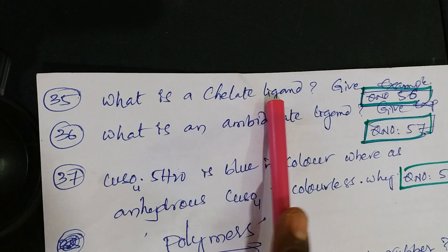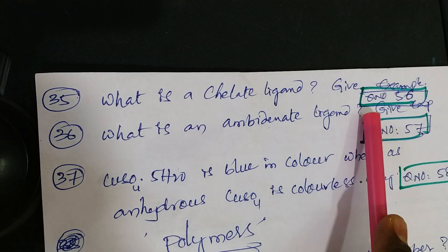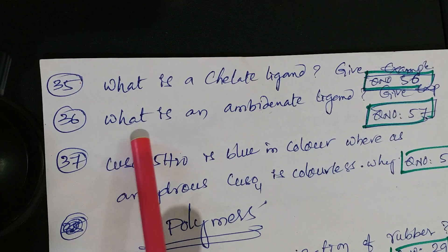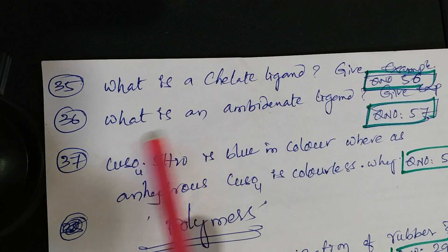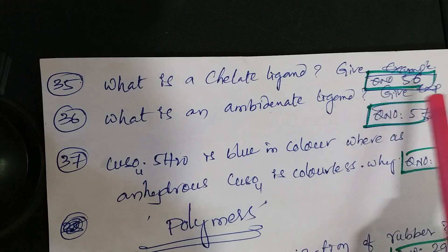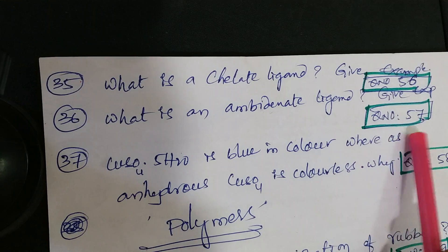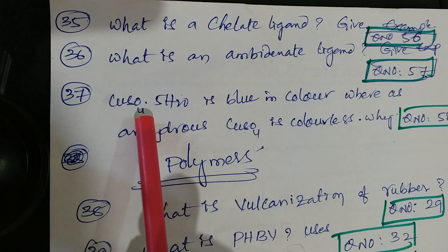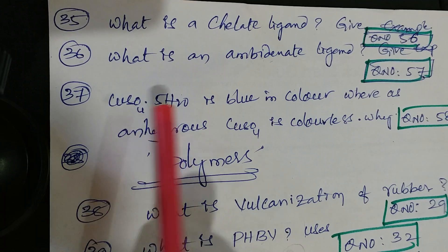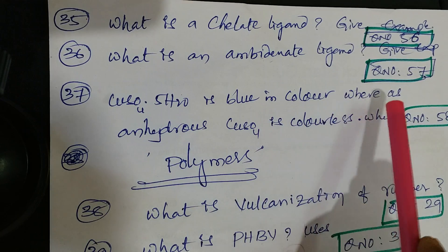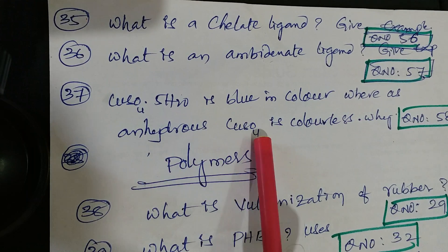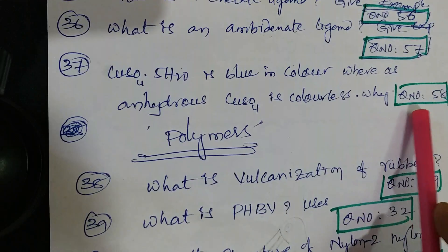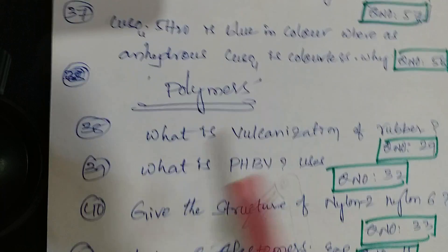What is a chelate ligand - give an example - question number 56. What is an ambidentate ligand - give an example - that is question number 57. Hydrated copper sulfate is blue in color whereas anhydrous copper sulfate is colorless - why? That is question number 58 from material and Telugu academy textbook.